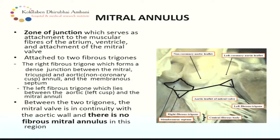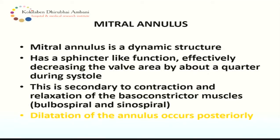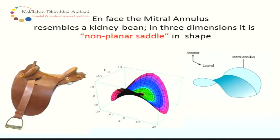Looking at the annulus — it has two different parts. The zone of junction serves as the attachment of the muscular fibers of the atrium and ventricle and attachment of the mitral valve, and it extends between the right and left fibrous triangles. Importantly, between the two triangles the mitral valve is in continuity with the aortic valve and there is no fibrous mitral annulus in this region — contrary to the belief that it is fibrous all around. It is a dynamic structure with a sphincter-like function, effectively decreasing the valve area by about a quarter during systole. This is secondary to contraction and relaxation of the basoconstrictor muscles, and if there is dilatation of the mitral valve annulus, it usually occurs posteriorly.